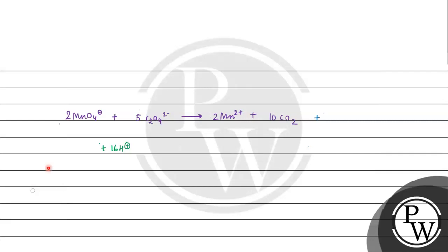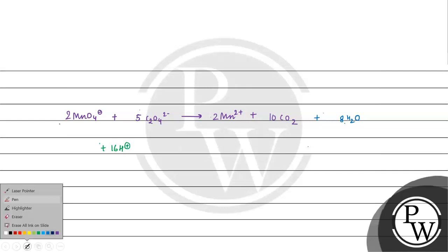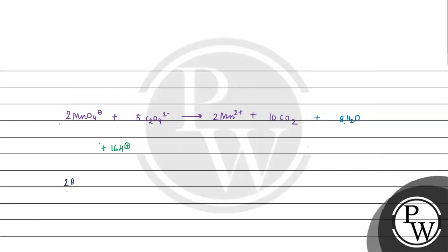Now we balance oxygen. On the reactant side there are 8 + 20 = 28 oxygen atoms total; on the product side there are only 20. We add 8 H2O to the product side. The fully balanced equation is: 2 MnO4⁻ + 5 C2O4²⁻ + 16 H⁺ → 2 Mn²⁺ + 10 CO2 + 8 H2O.